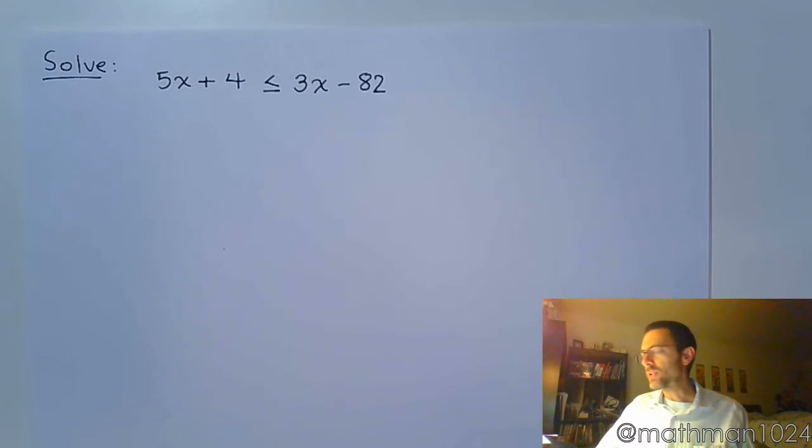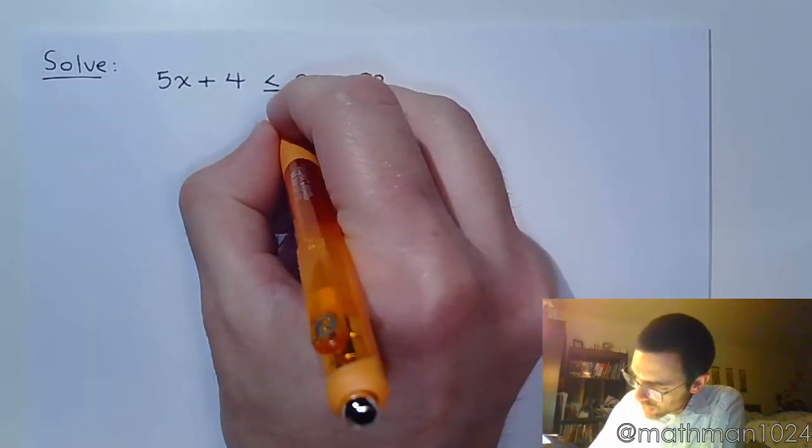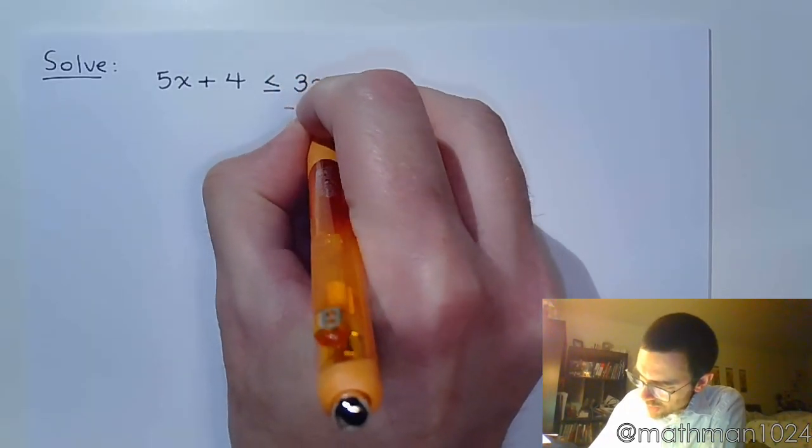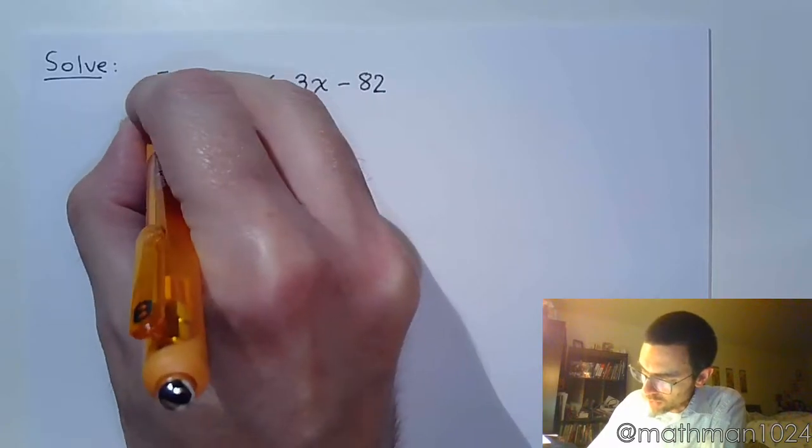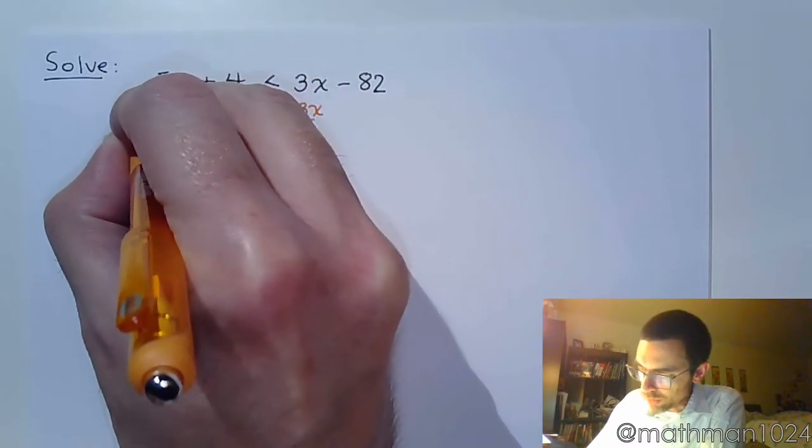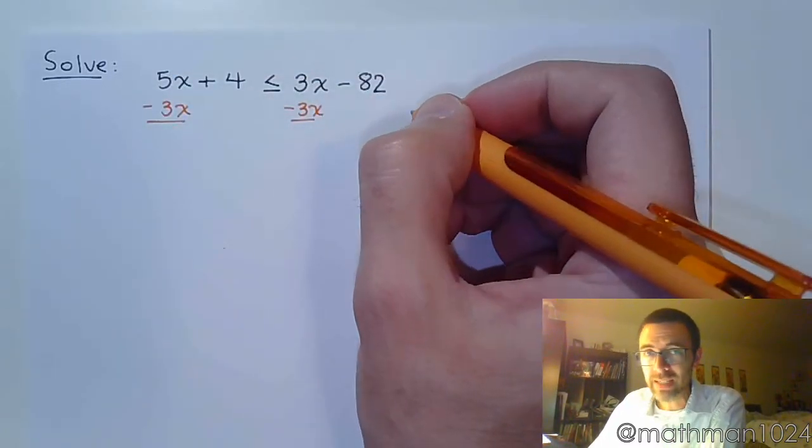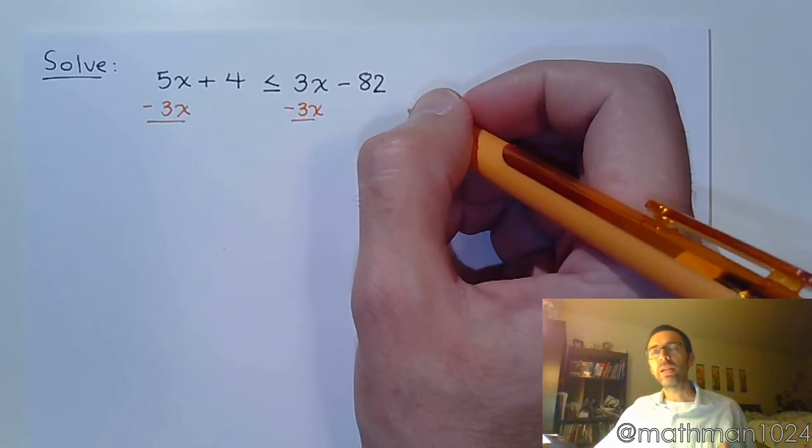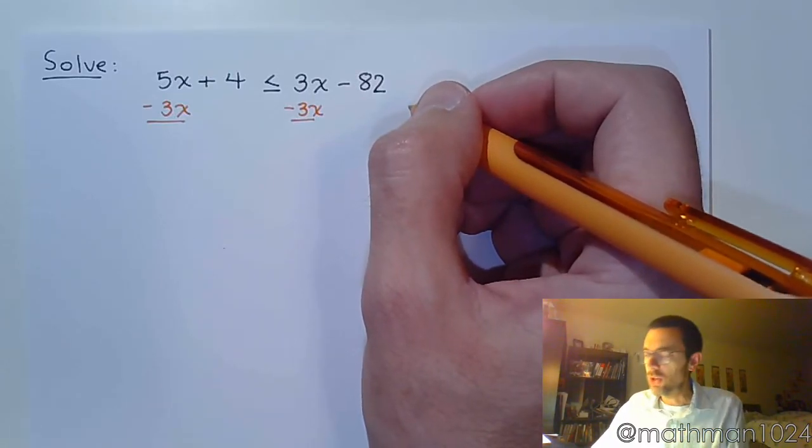So let's look at this one. Really, the first thing you should do is figure out where you want to put your variable terms. I suggest that you move your variable terms in such a way so that you have a positive coefficient. If I want to do that, I need to subtract 3x from both sides of the inequality.